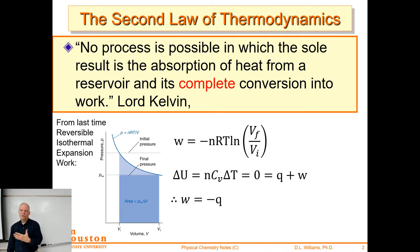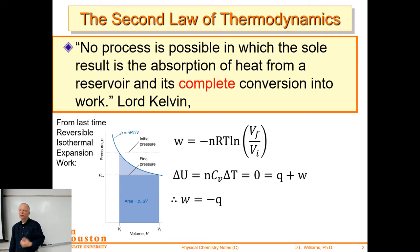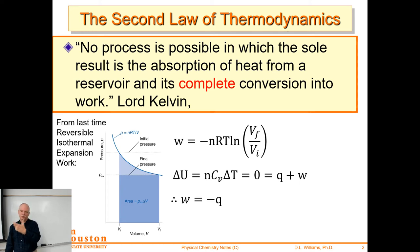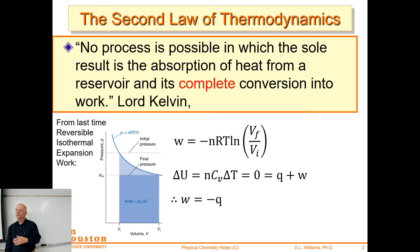To get a heat engine, we also need adiabatic expansions and compressions where heat flow is zero. We're not able to build a cycle out of just isothermal expansions and compressions — we need those adiabatic steps too. We'll get to that with the Carnot cycle. Even that perfect cycle has limits to its efficiency — we're not able to reach 100% efficiency.